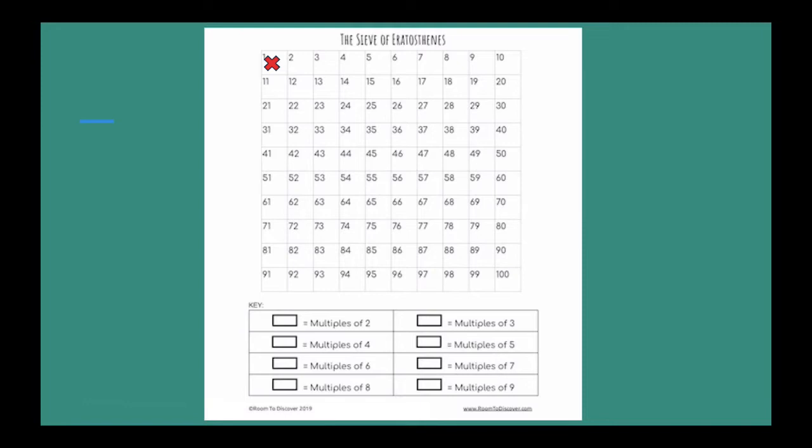So we're going to start with a big red X in one. Why? Well, the sieve is about finding prime numbers and one is a special number because it's a whole number and it's neither prime nor composite.